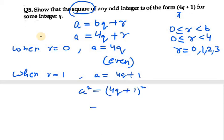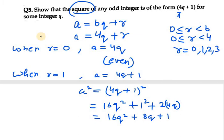Now 4q plus 1 squared can be written as 16q squared plus 1 squared plus 2 into 4q, so it will be 8q. Bringing 1 to the back, we are left with 16q squared plus 8q plus 1. Now we can take 4 common from the first two terms, so we get 4 times 4q squared plus 2q plus 1.